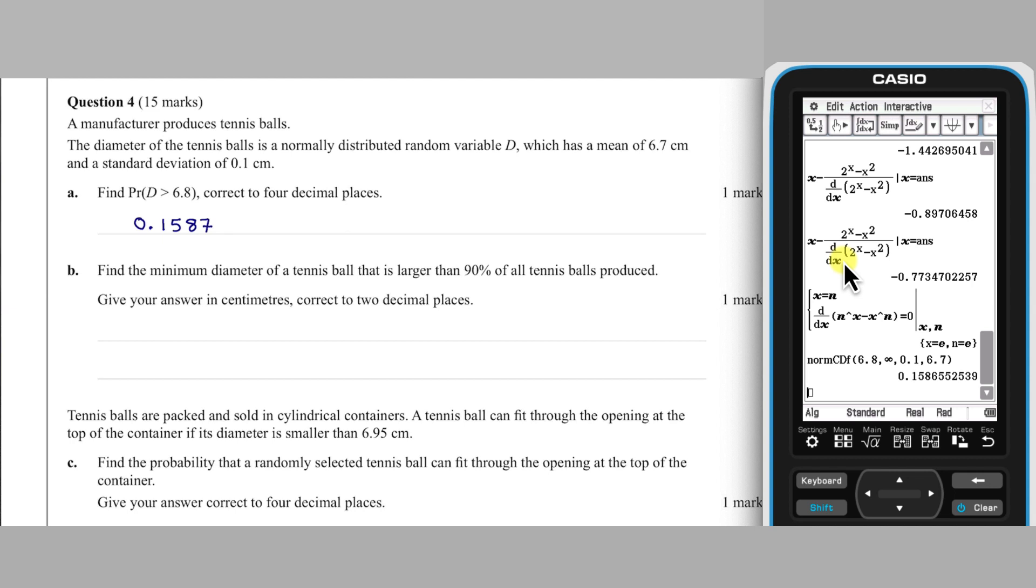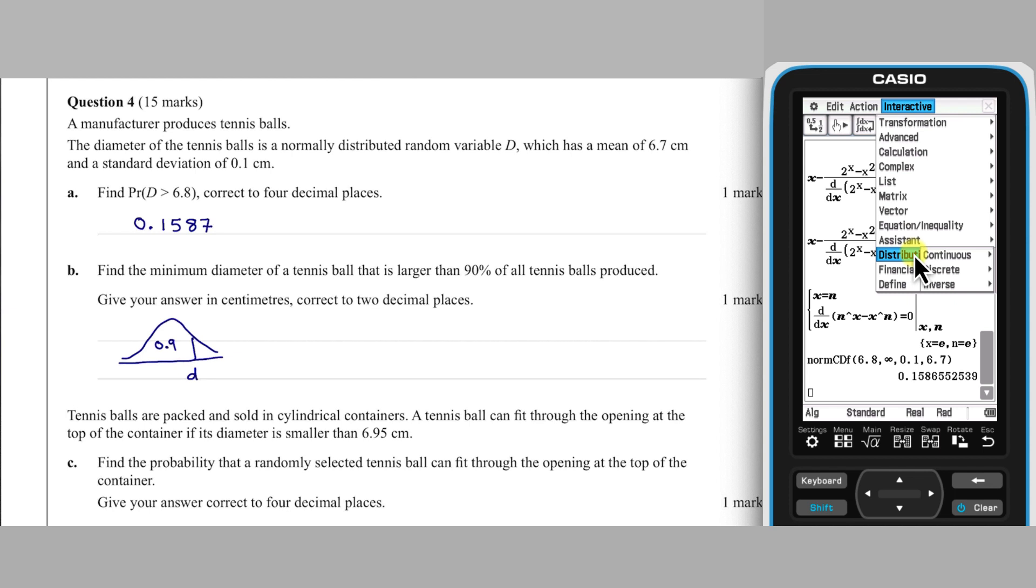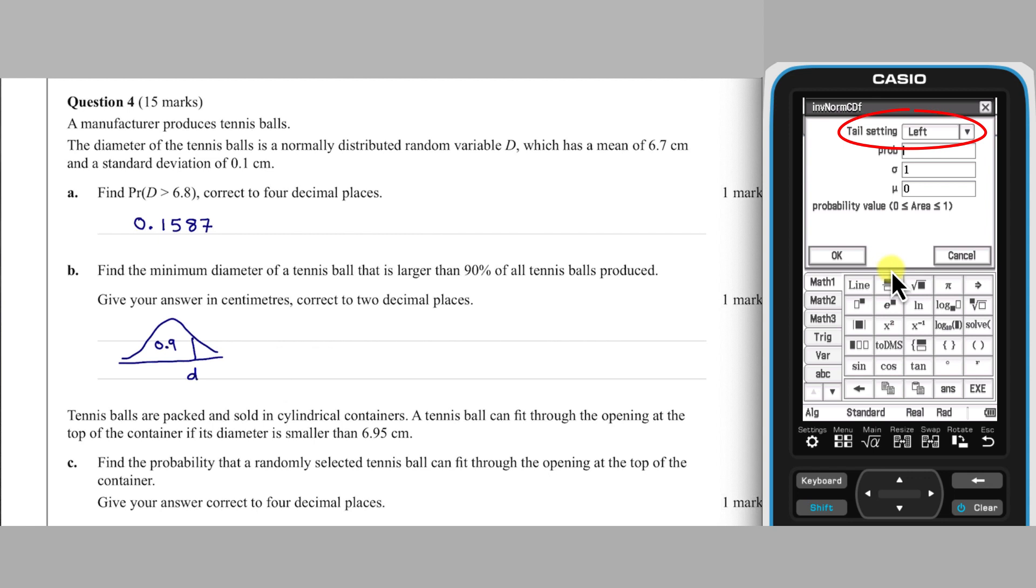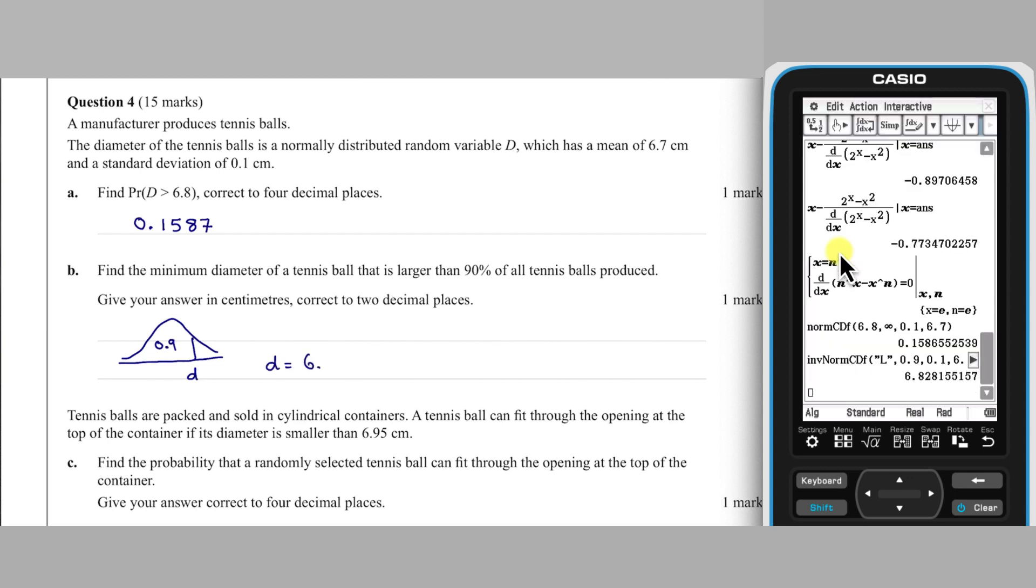Part B asks for the cutoff diameter for the smallest 90% of tennis balls. This can be found using an inverse distribution command. The classpad calls this invnormcdf and it can be found via interactive distribution slash inverse distribution inverse. In the pop-up, make sure that the tail is left, enter the probability of 0.9 and enter the standard deviation and mean. Pressing Execute, we obtain a diameter of 6.83 cm, correct to 2 decimal places.